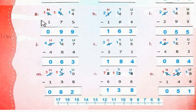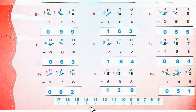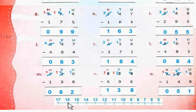Part G: 274 minus 175. 4 से 5 minus नहीं होता। So हम 7 से 1 ten borrow करेंगे — यह 6 रह जाएगा, और यह 14 हो जाएगा। 14 minus 5 = 9. अब 6 से 7 minus नहीं होता, so हम फिर 2 से 1 hundred borrow करेंगे — यह 1 रह जाएगा, और यह 16 tens हो जाएगे। 16 minus 7 = 9. 1 minus 1 = 0. So the answer is 99.